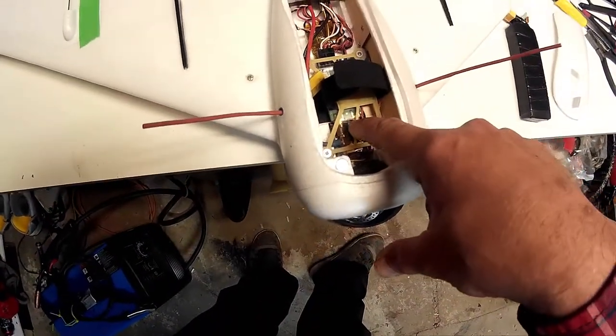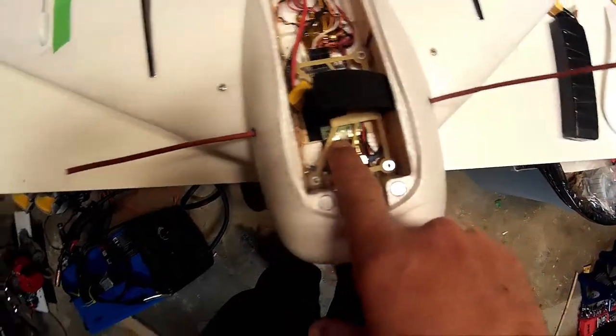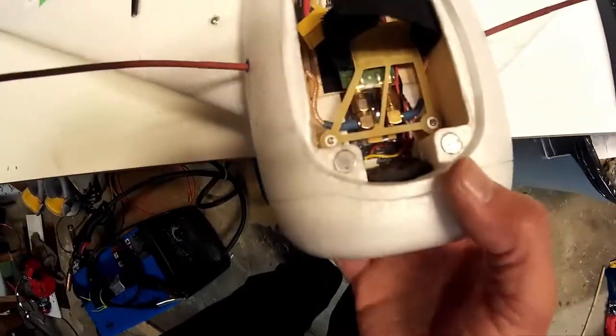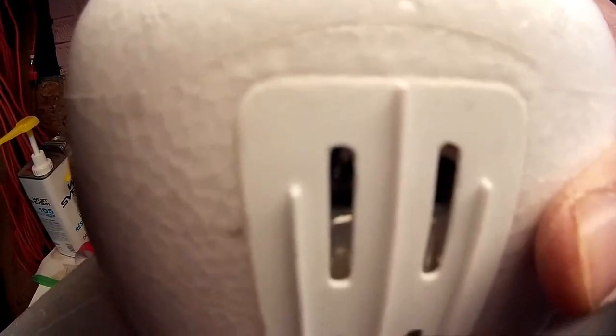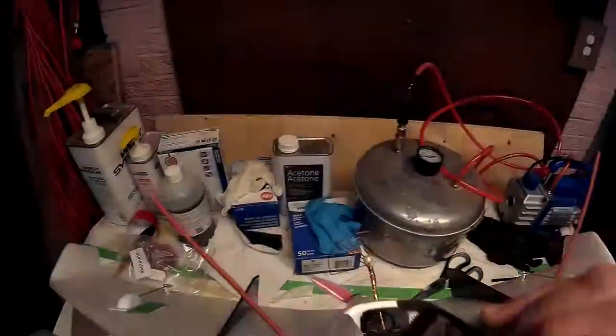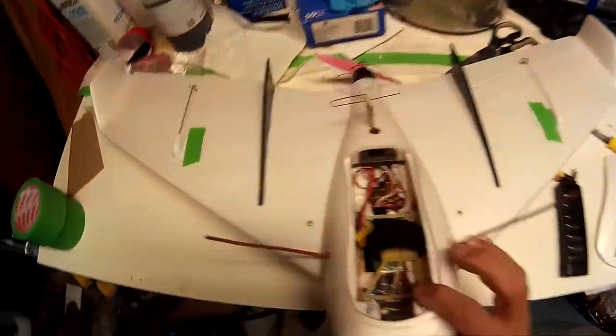So my receiver is at the bottom and my video transmitter is at the very bottom which you can see here. It's a Boss Cam 2.4 GHz. It needs a lot of cooling.